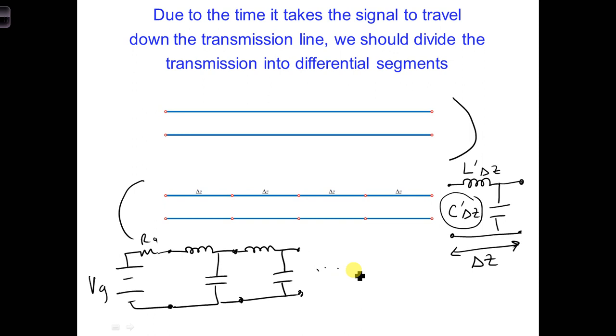Looking at it this way, we have cascading inductors and capacitors. In the limit, where each segment becomes infinitely short, delta z goes to zero.